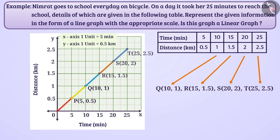All the line segments of the constructed graph are part of same line. So, we can say that the obtained graph is a linear graph.